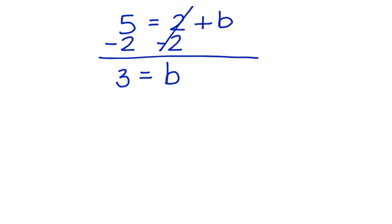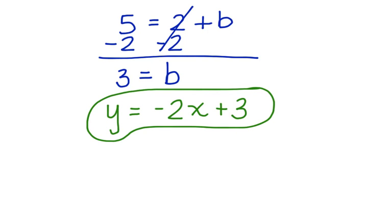Now let's write our equation in slope-intercept form. y is equal to negative 2x plus 3. Here's the equation for our line.